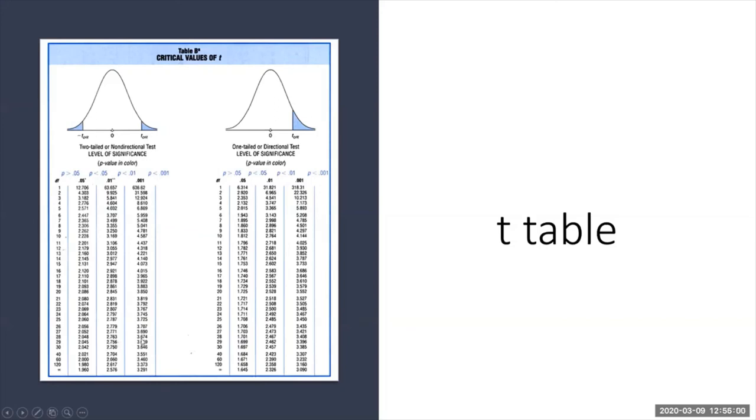Let's say I had this as my rejection region. If my math had come out as 2.9 and I needed a 3.659 and higher or a negative 3.659 and lower, would it be in the rejection region? No, I'd fail to reject the null.